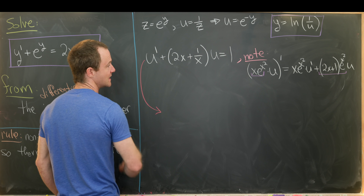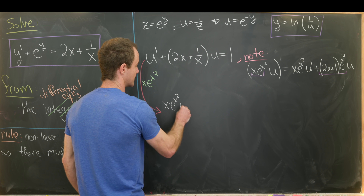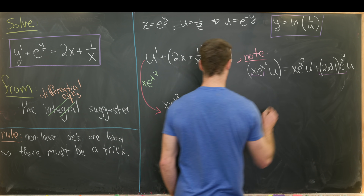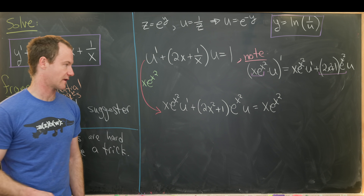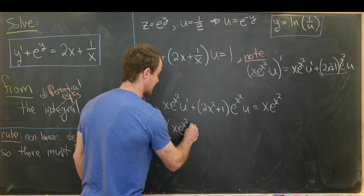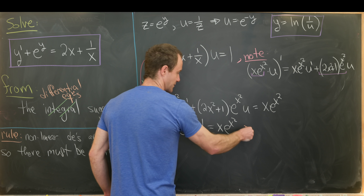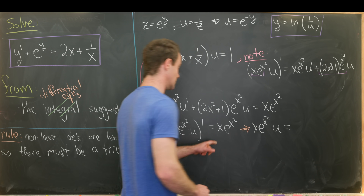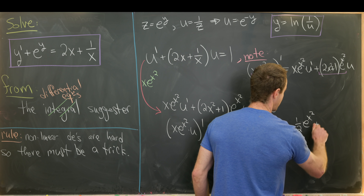Multiplying through by x times e to the x squared gives x times e to the x squared times u prime plus (2x squared plus 1) times e to the x squared times u equals x times e to the x squared. The left-hand side can then be written as the derivative of x times e to the x squared times u, and the right-hand side is x times e to the x squared. Taking the antiderivative of both sides, using a simple substitution on the right, gives x times e to the x squared times u equals one-half e to the x squared plus a constant.